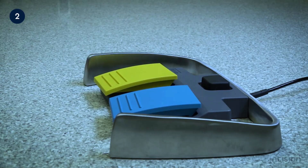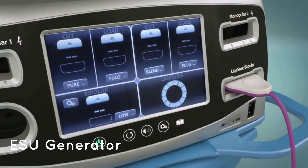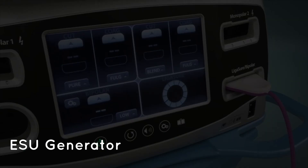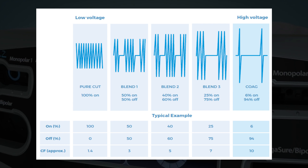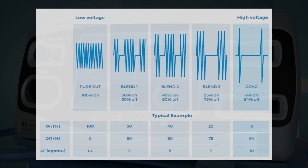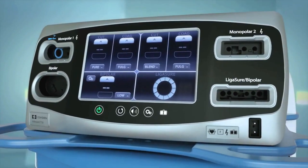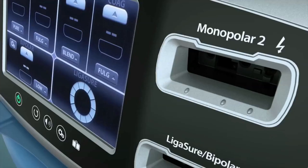ESU generators are able to produce a variety of waveforms. As waveforms change, so will the corresponding tissue effects. Using a constant waveform, like cutting, the surgeon is able to vaporize or cut the tissue — these waveforms produce heat very rapidly. Using an intermittent waveform, like coagulation, causes the generator to modify the waveform so that the duty cycle is reduced. This interrupted waveform will produce less heat; instead of tissue vaporization, a coagulum is produced.